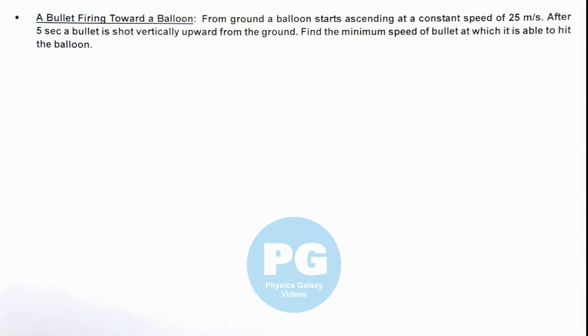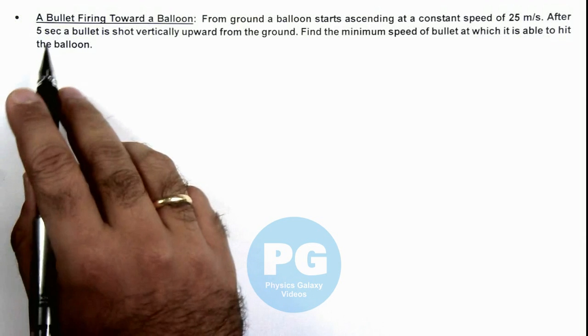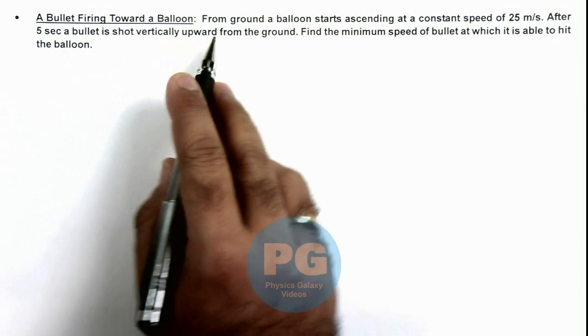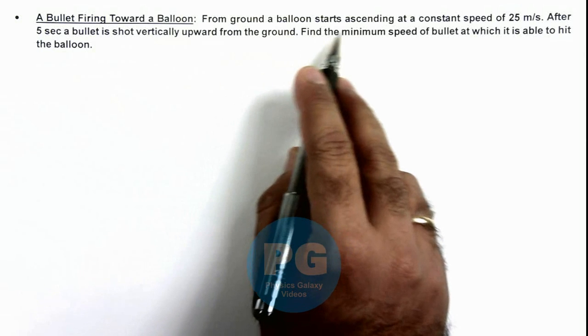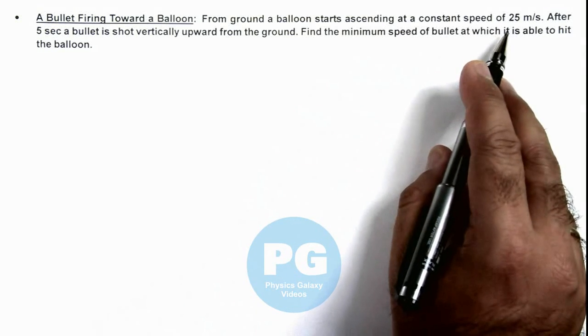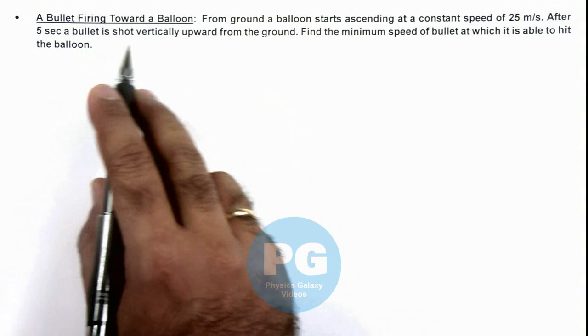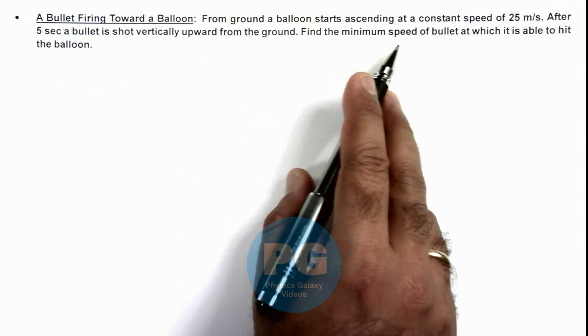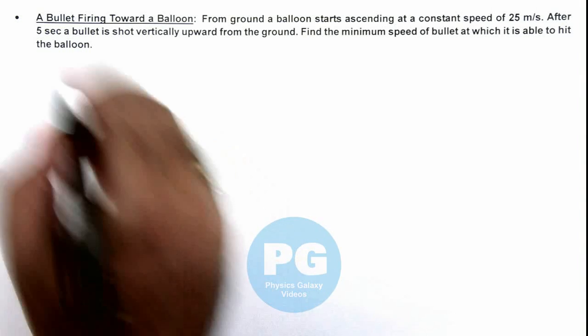In this illustration we'll discuss a bullet which is fired towards a balloon. We are given that from ground a balloon starts ascending at a constant speed of 25 meters per second. After 5 seconds a bullet is shot vertically upward from the ground. We are required to find the minimum speed of bullet at which it is able to hit the balloon.